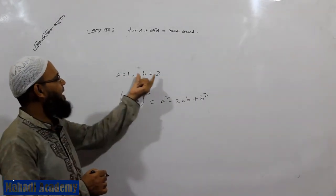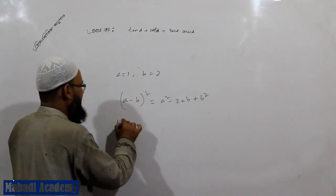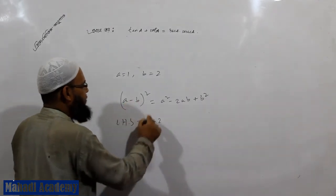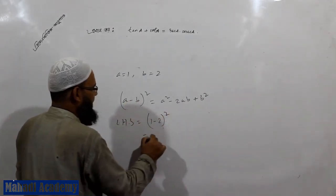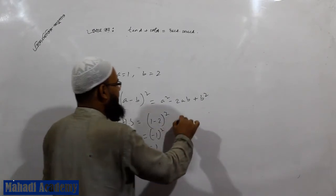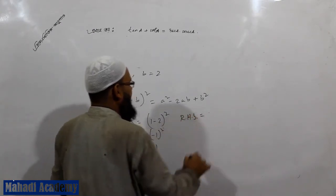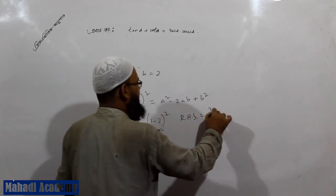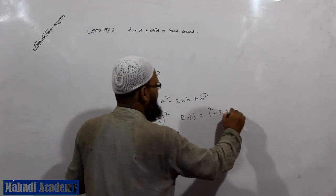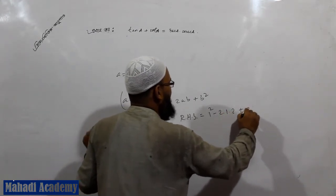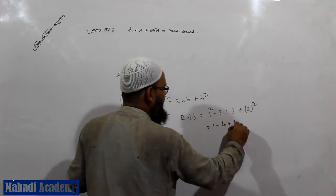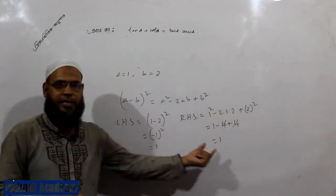If you see R1 and R2, it is the left hand side. What is that? 1 minus 2. This is R1 and R2. It is a square. What is that? It is minus 1. That is 1. If you look at the right hand side, R1 is 1 squared, minus 2 into 1. What is that? 1 minus 4 plus 4. We see 1 minus 4 plus 4. Look at that.